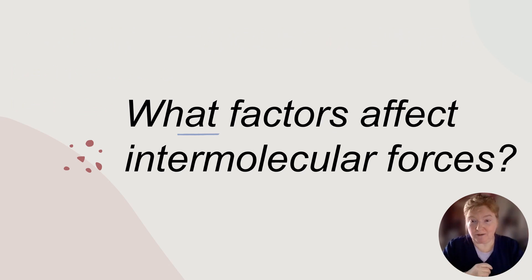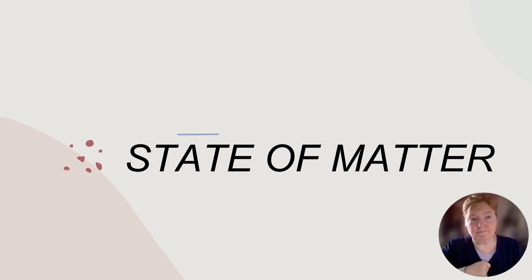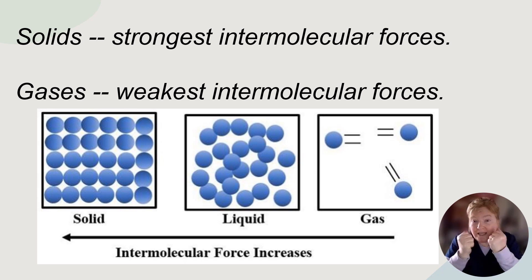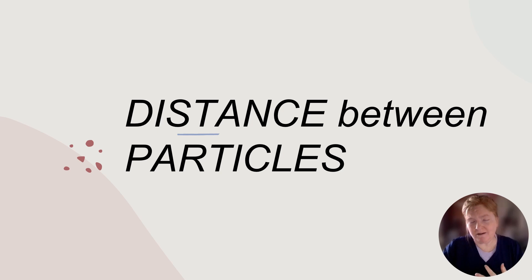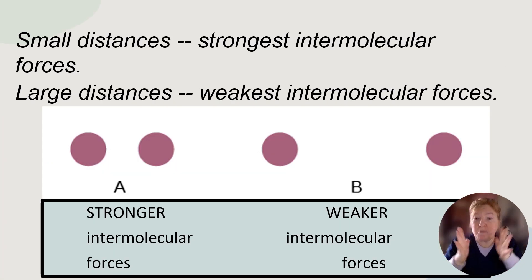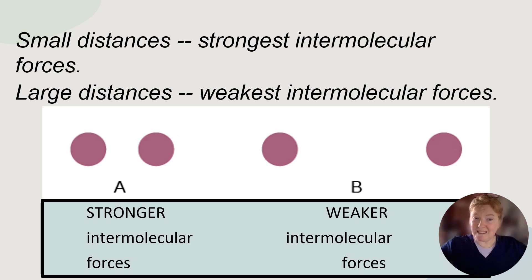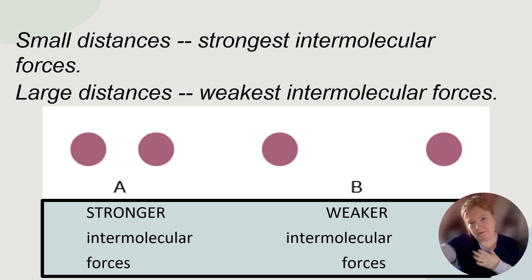So what factors make intermolecular forces stronger or weaker? One is state of matter. In solids, we have the strongest intermolecular forces — there are forces holding those particles closer together. Gases have the weakest intermolecular forces. Then we have the distance between particles, which is also affected by solid, liquid, and gas. When there's a small distance, the intermolecular forces are greater and stronger. When there's a big distance, they are weaker — you can hold something tighter if it's closer to you.